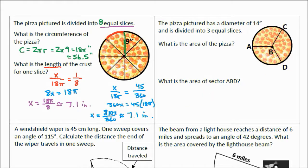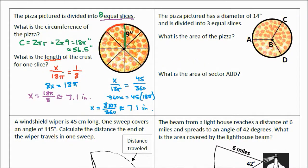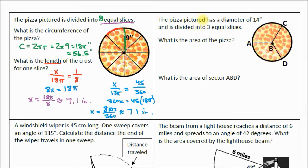Alright, let's do one more. Let's do the one to the right. The pizza pictured has a diameter of 14 inches and is divided into three equal slices. Oh, that's nice. Got equal slices again. What is the area of the pizza? First thing is, find area. We know the diameter is 14. That means the radius is going to be 14 divided by 2, which is 7 inches.